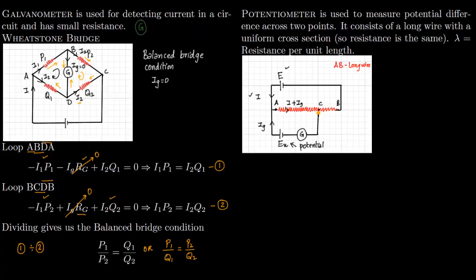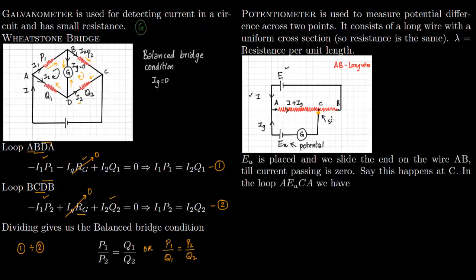We place the unknown battery in a loop and slide the contact point C along the wire. We keep sliding it until the galvanometer shows zero reading — that is, until I of G equals zero. When it becomes zero, we stop, and then we can compute the potential.